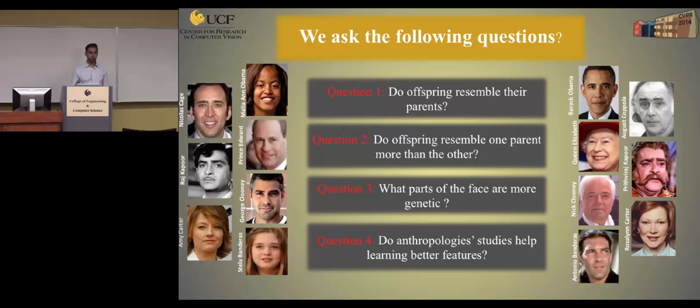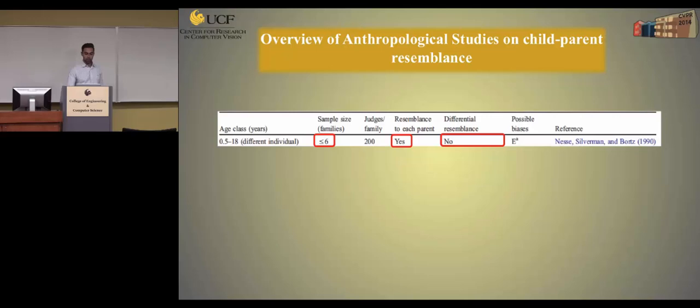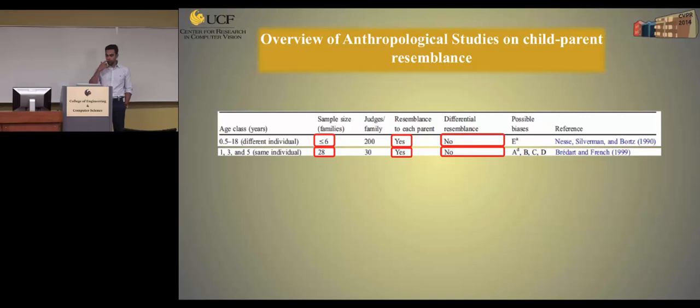Let's look at some anthropological studies on child-parent resemblance in the past. Around 25 years ago, a small experiment on six families concluded that there is a resemblance between parent and offspring, but there is no differential resemblance — meaning children do not resemble one parent more than the other. Almost nine years later, the same experiment on 28 families made the same conclusion.